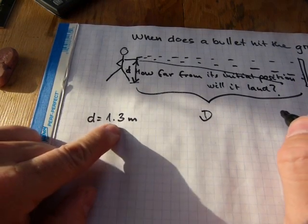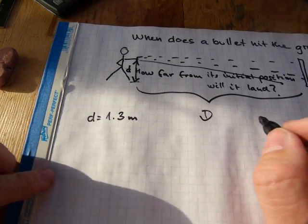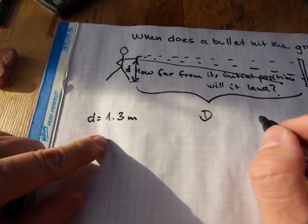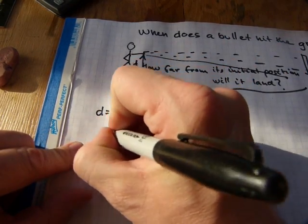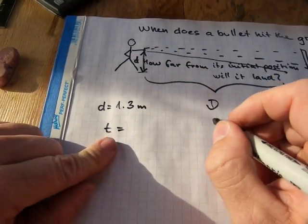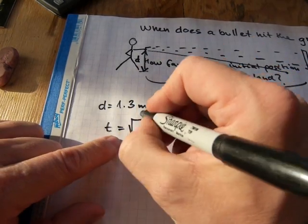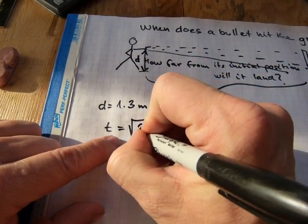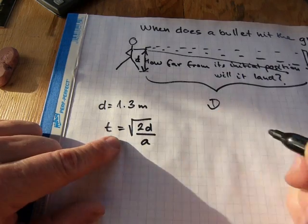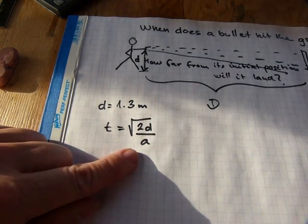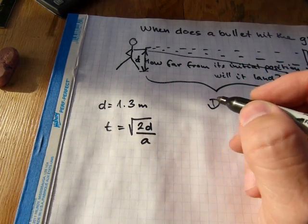So the height of the gun or arrow at which a bullet is fired is 1.3 meters, and it will hit the ground at this time, which is calculated: square root of twice the distance divided by the gravitational acceleration standard on earth, which is 9.8 meters per second squared.